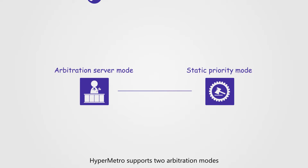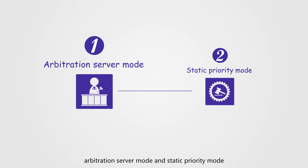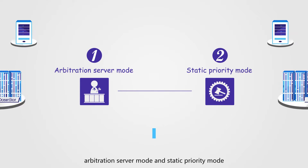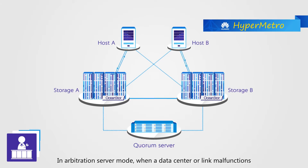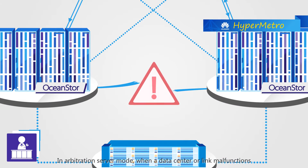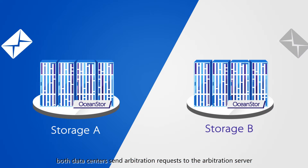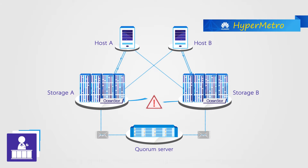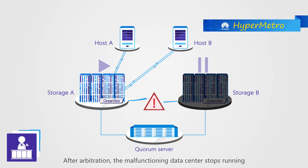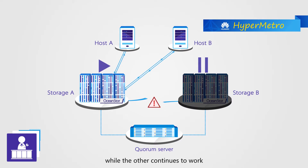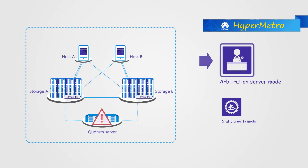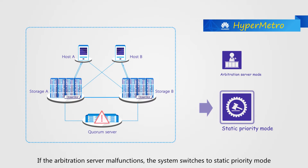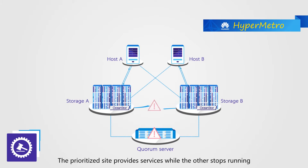HyperMetro supports two arbitration modes: Arbitration Server Mode and Static Priority Mode. In Arbitration Server Mode, when a data center or link malfunctions, both data centers send arbitration requests to the Arbitration Server, which then performs arbitration. After arbitration, the malfunctioning data center stops running while the other continues to work. If the Arbitration Server malfunctions, the system switches to Static Priority Mode, where the prioritized site provides services while the other stops running.